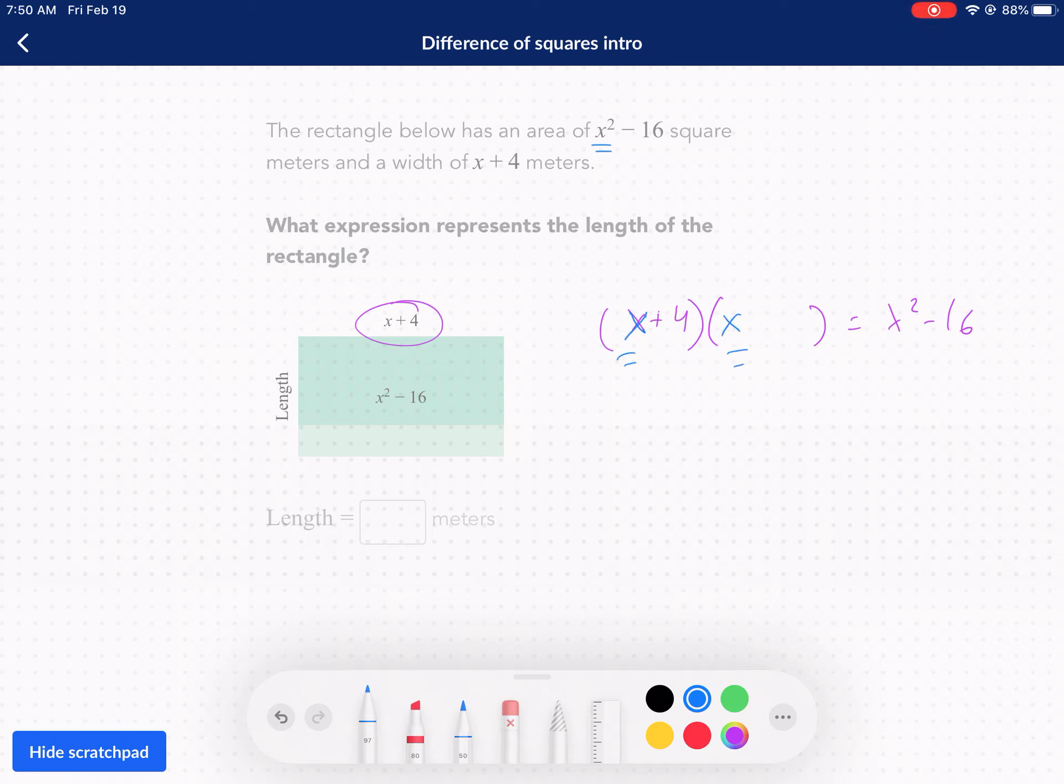So we have our first one here. It's going to be x and x, square root of x squared. Square root of negative 16, or sorry, just 16. And that's four and four. We have to make one positive and one negative. And there's our answer, x plus four, x minus four.